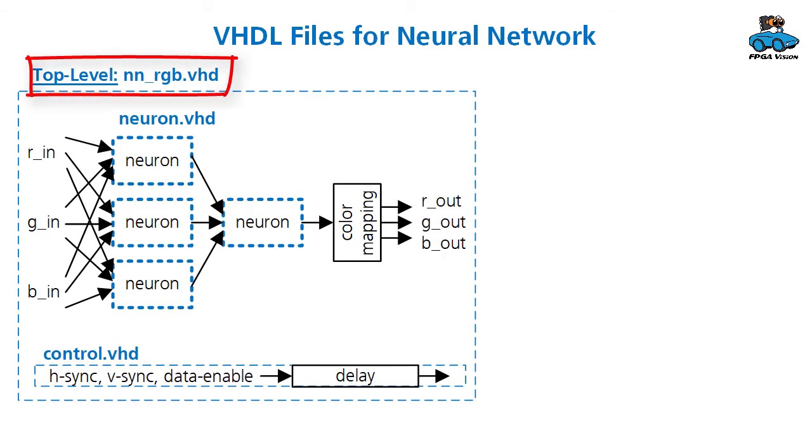This structure is coded in VHDL and the top level is called NN_RGB. It uses four submodules for the four neurons, which are coded in Neuron.VHD. We have another submodule, Control.VHD, for delaying the sync signals that our video uses.